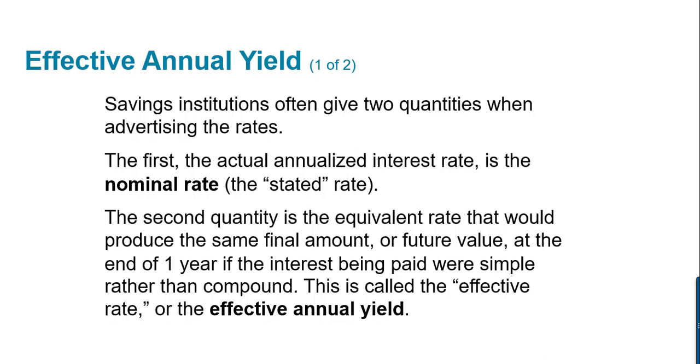In this video, we're going to talk about effective annual yield, which is the difference between the advertised rate of interest, say 5% compounded monthly, and what that rate is actually worth each year if it had been stated in simple interest. The nominal rate is the actual annualized interest rate, and the effective annual yield is how much that actually turns out to be in the end.